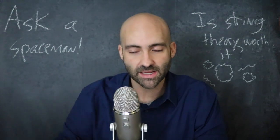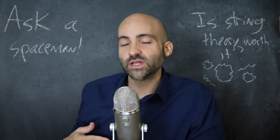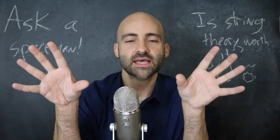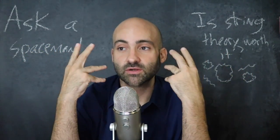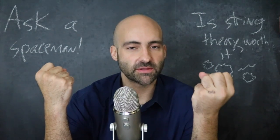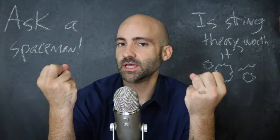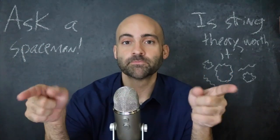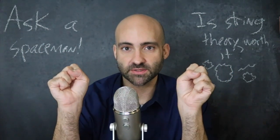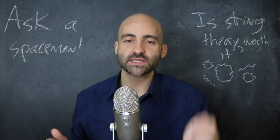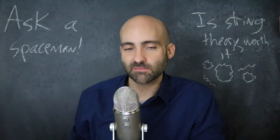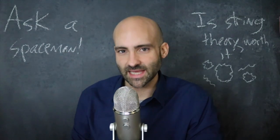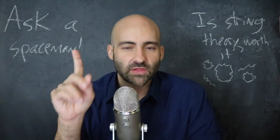Then we took it one step further with the concept of supersymmetry, which allowed us to connect the two great branches of reality: the force carriers called bosons and the building blocks called fermions, which look, behave, and act completely different but might actually be unified through supersymmetry. All these ingredients woven together give us our modern string theory, which really got going in the 1970s and into the 80s — but there's one thing missing.